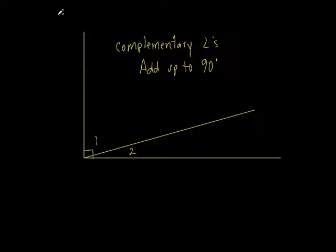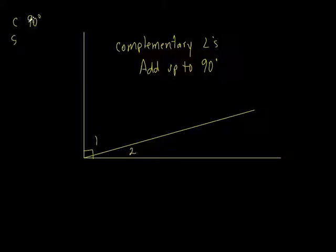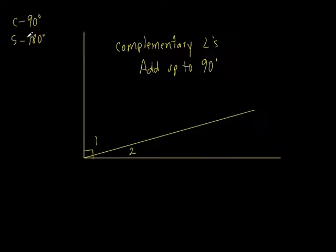A lot of people get confused between the two — which one is complement, which one is supplement? Just look at alphabetical order. Complement starts with C, and supplement starts with S. C comes before S in the alphabet. And 90 comes before 180. So 90 goes with complementary and 180 goes with supplementary. C comes before S, 90 comes before 180 — those two go together and these two go together. It's just alphabetical order and numerical order.